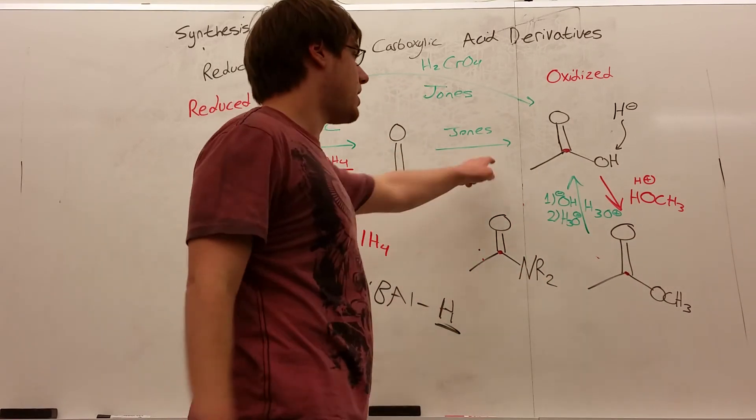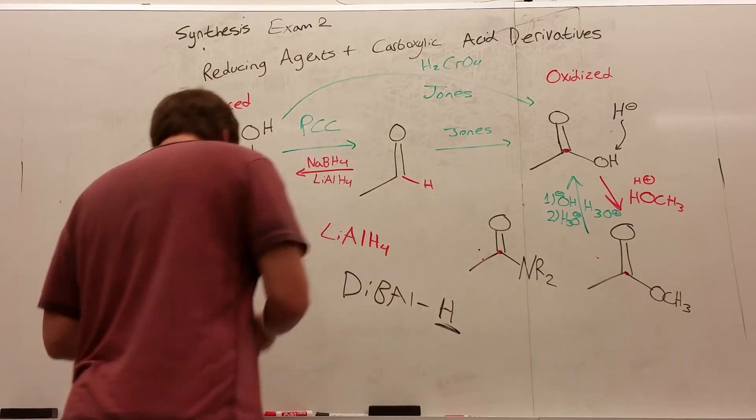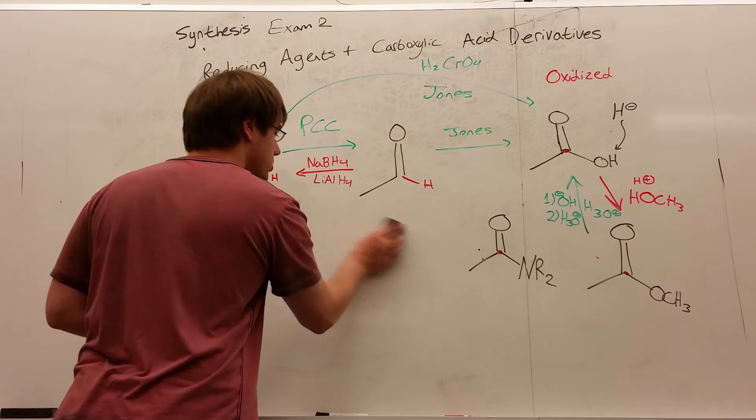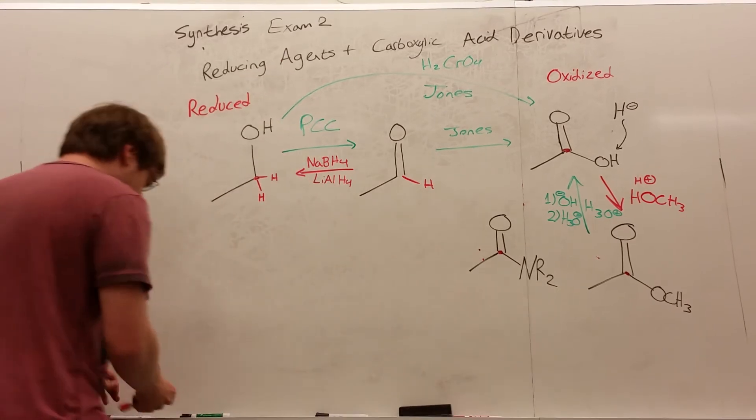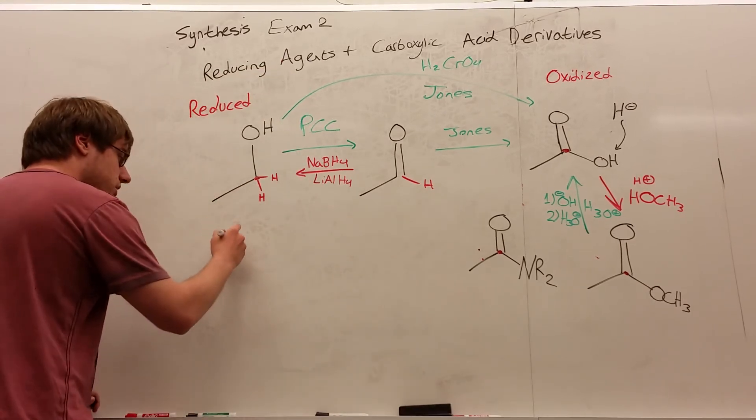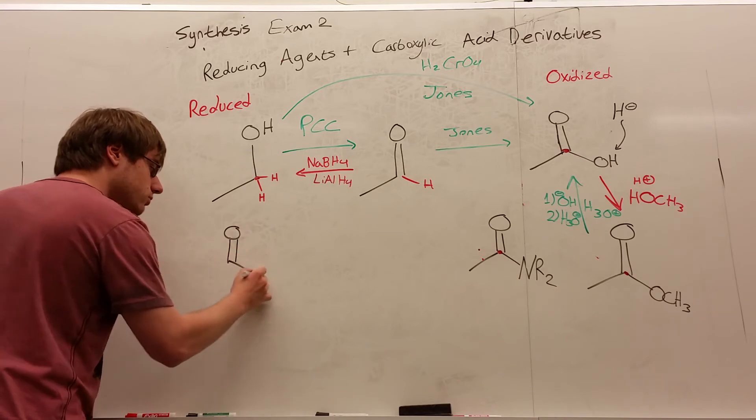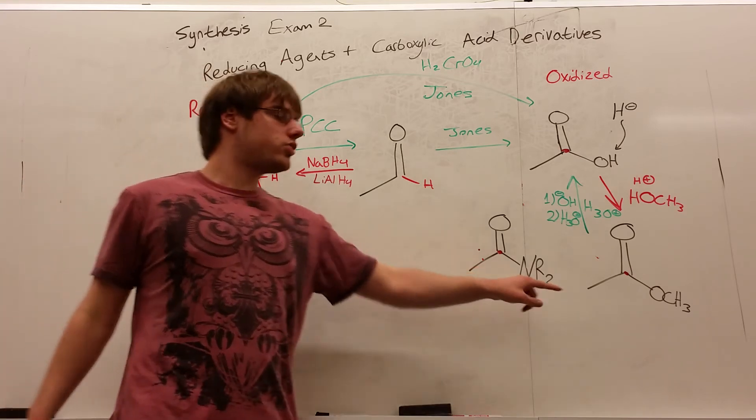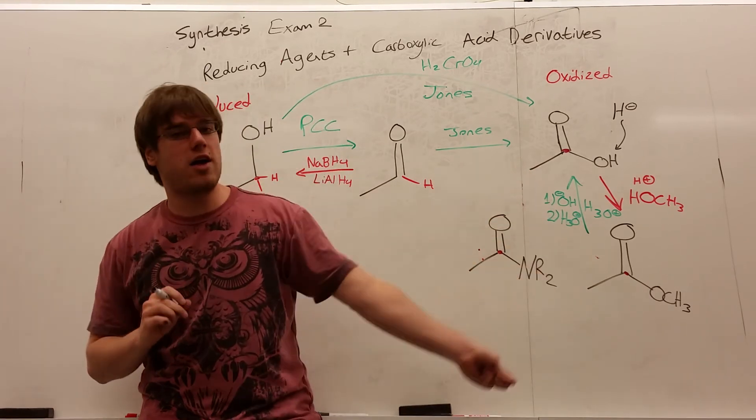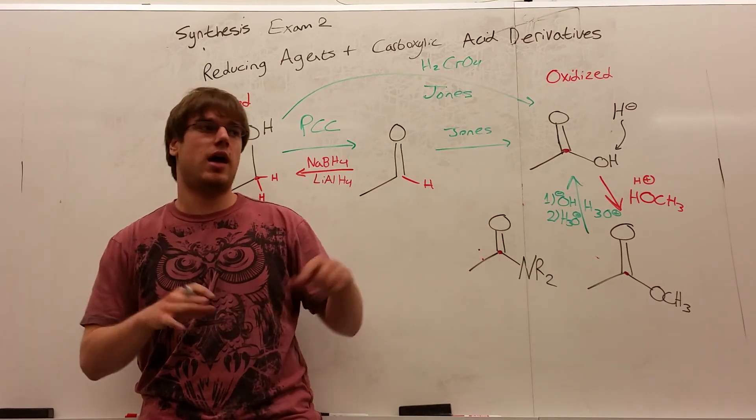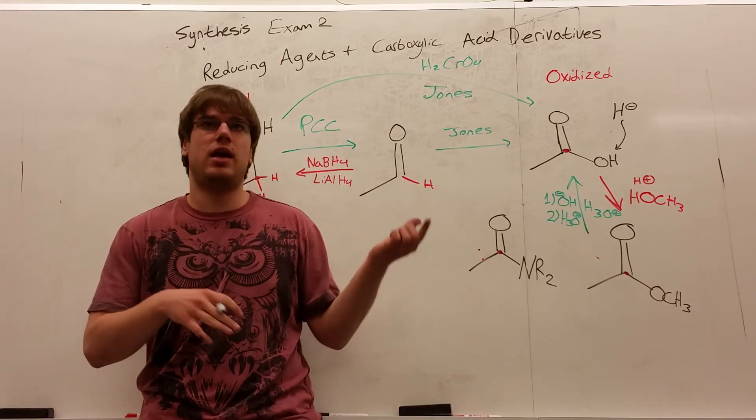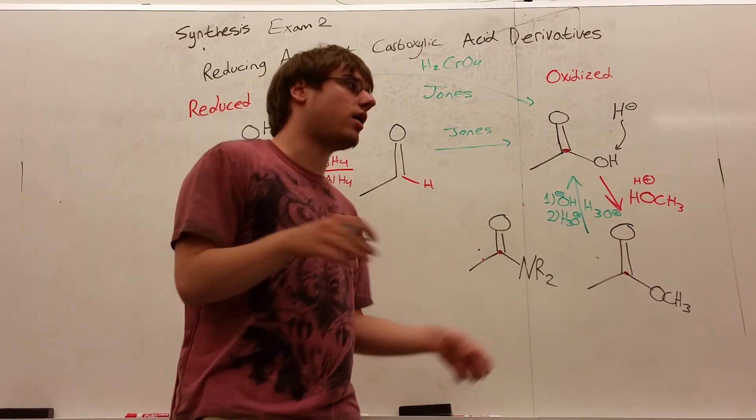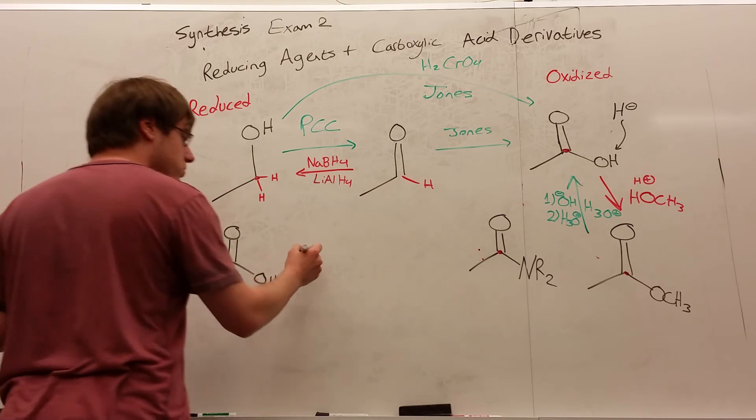Now what about the amide? How do I turn a carboxylic acid into an amide? Well there are actually two routes to go about this, and I don't think I have enough room to draw it out here, so I'm going to draw it down here. So we want to turn a carboxylic acid into an amide. Now I wrote R2, R can be any number of hydrogens or carbon, so it could be NHCH3, or it could be NCH3 and then another CH3, it doesn't matter.